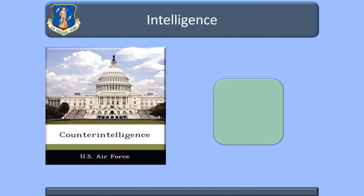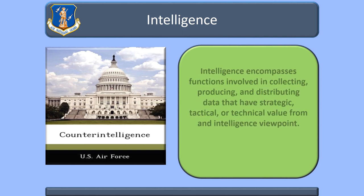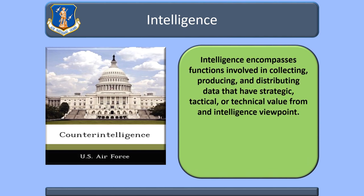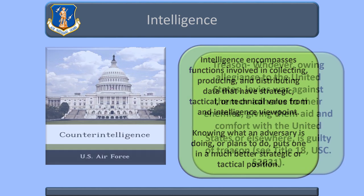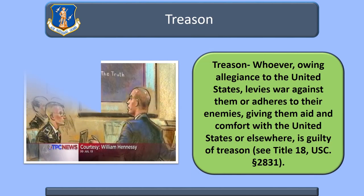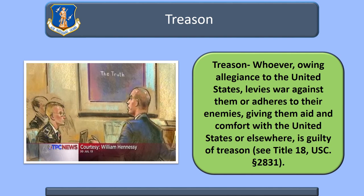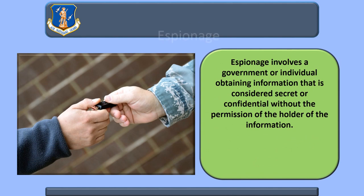Intelligence encompasses functions involved in collecting, producing, and distributing data that have strategic, tactical, or technical value from an intelligence viewpoint. Treason is when whoever, owing allegiance to the United States, levies war against them, or adheres to their enemies, giving them aid and comfort within the United States or elsewhere, is guilty of treason. Espionage involves a government or individual obtaining information that is considered secret or confidential without the permission of the holder of the information.